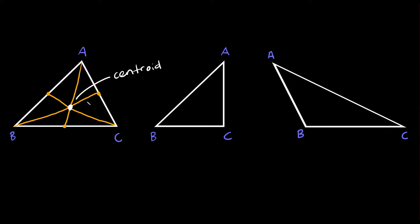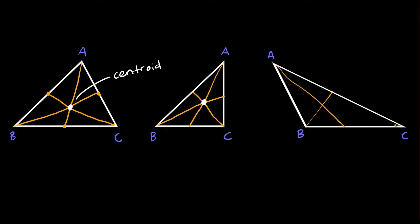It's important to note that the centroid of a triangle is always located inside the triangle. For an acute triangle the centroid is on the inside. For a right triangle — drawing from the vertex to the midpoint of the opposite side for each median — the centroid is still inside. And same thing for an obtuse triangle: all three medians intersect at a point that is still inside the triangle.